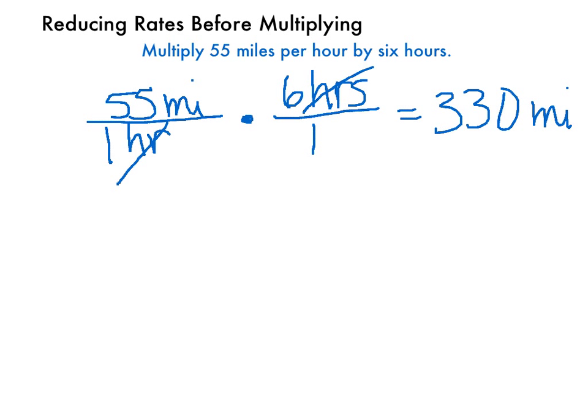In this problem, we cancel units once again because we're multiplying a rate, 55 miles per hour, by another measurement, 6 hours. So canceling units simplifies our problem.